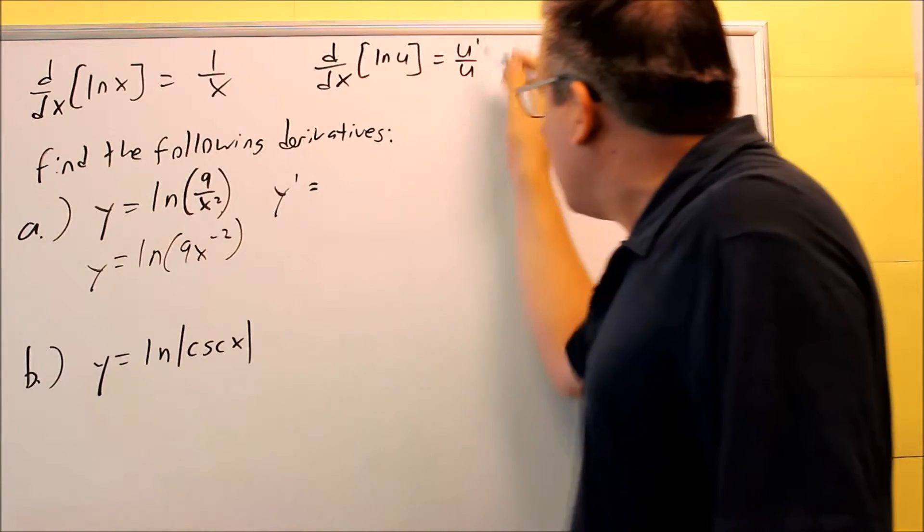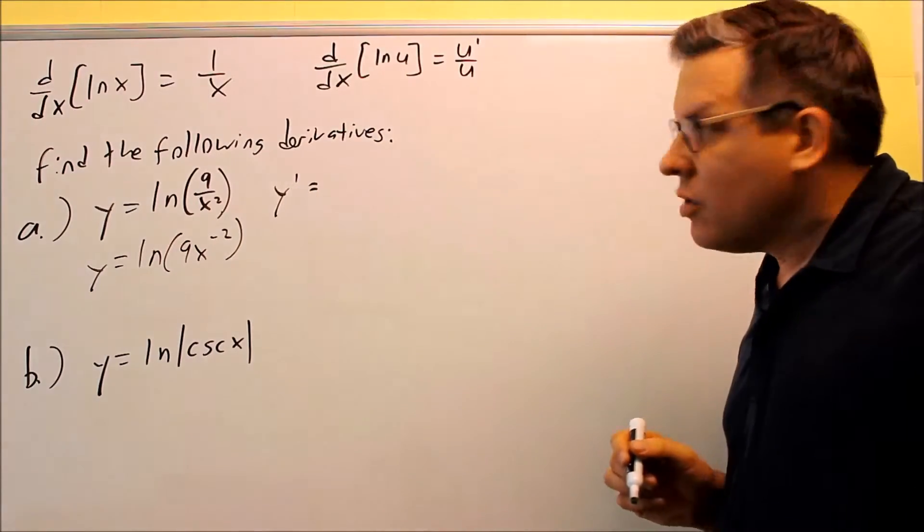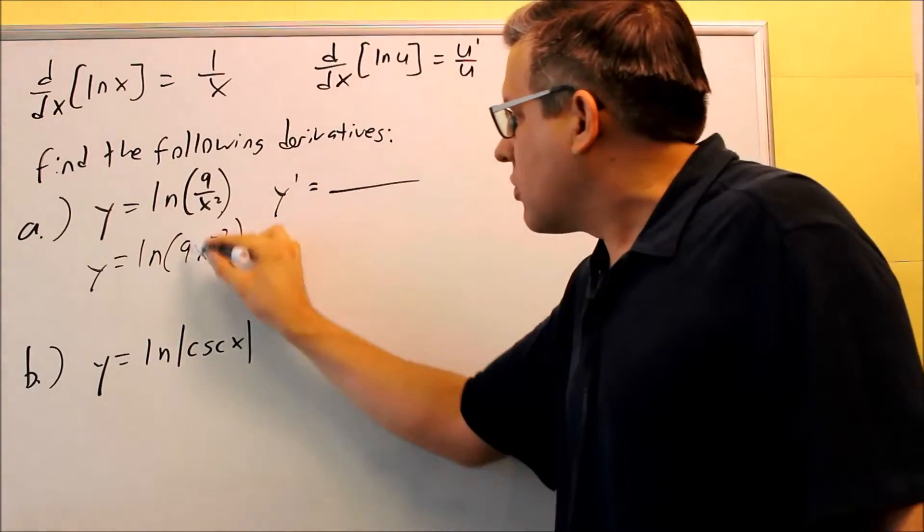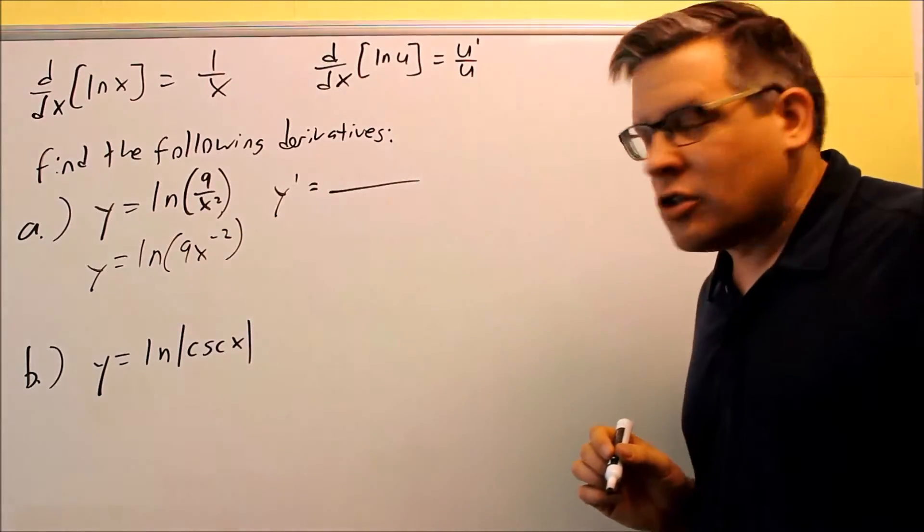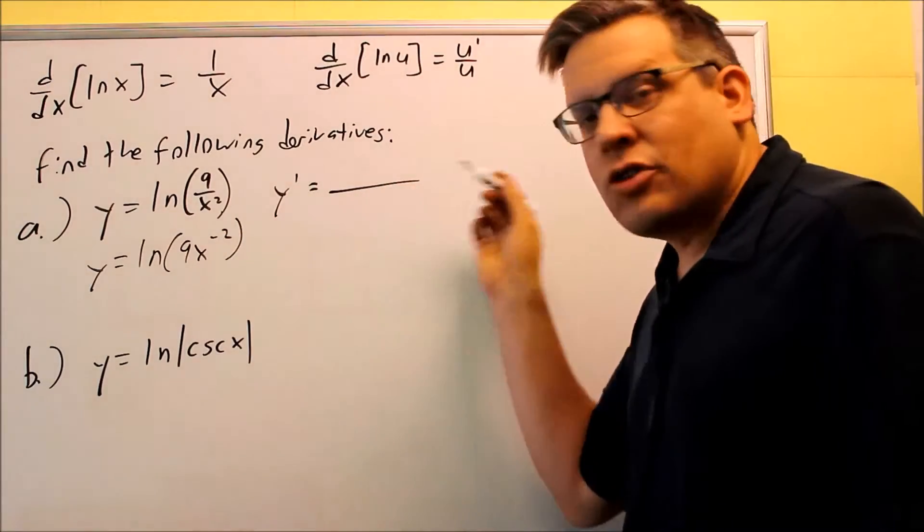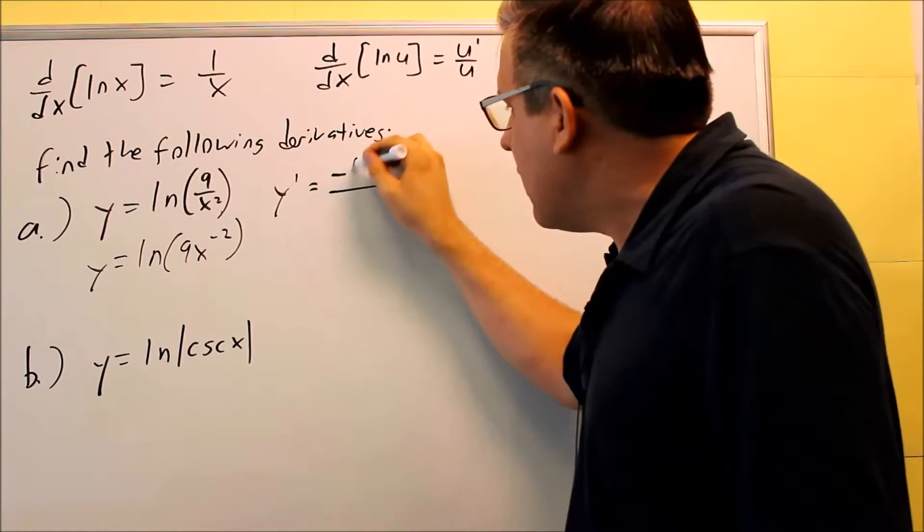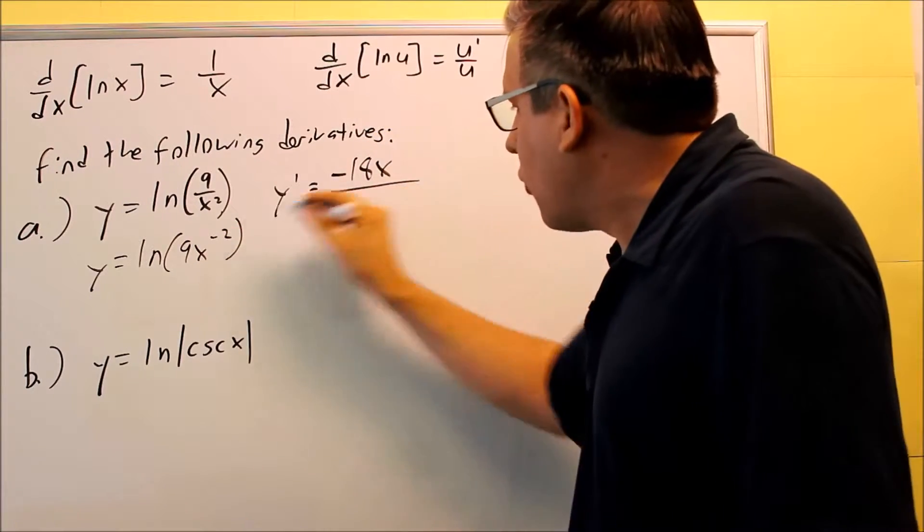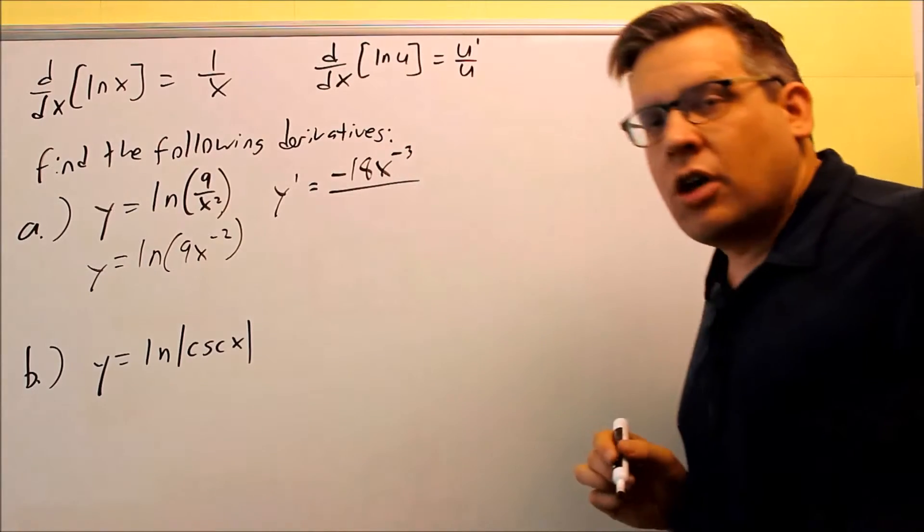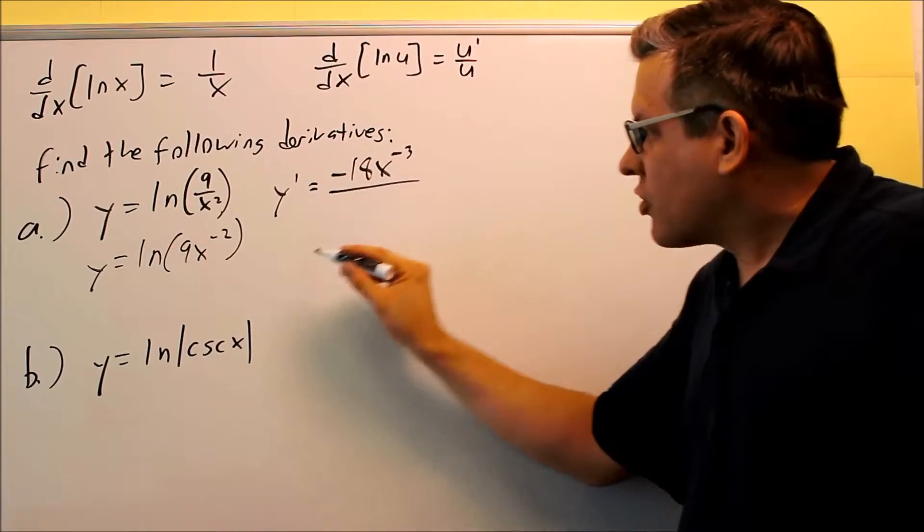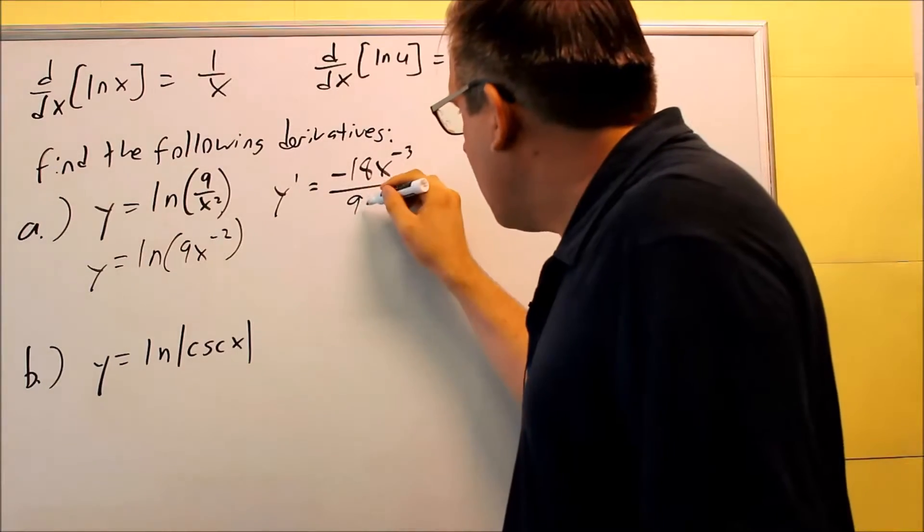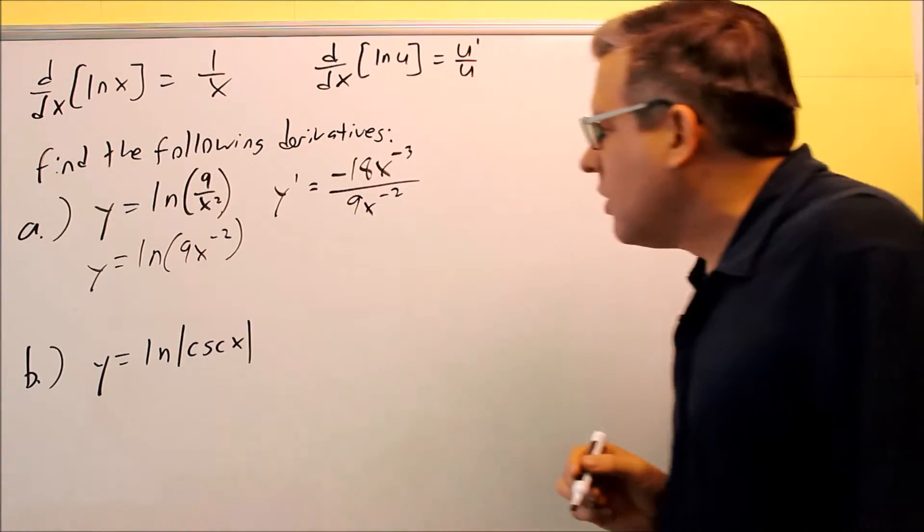Y prime is going to equal, following the formula, it's u prime over u. We're going to take the derivative of this first, using the power rule. That's going to go on top, that's your u prime. Negative 2 comes down, multiplied by the 9, negative 18, subtract 1 from the exponent, and you get negative 3. On the bottom, you're just going to put 9x to negative 2.